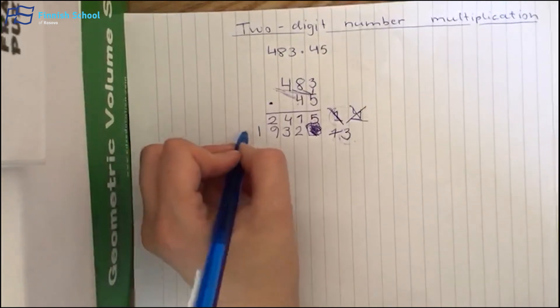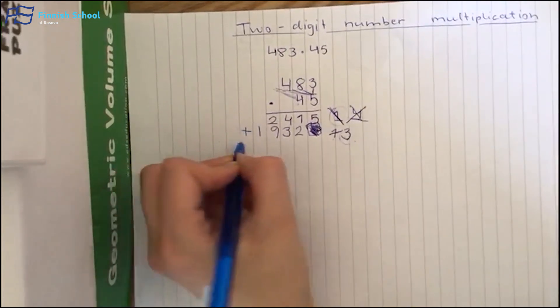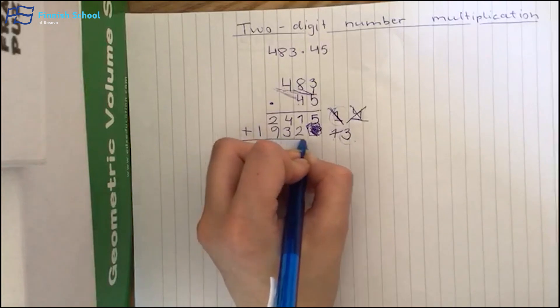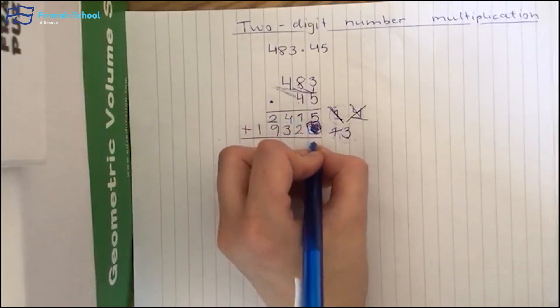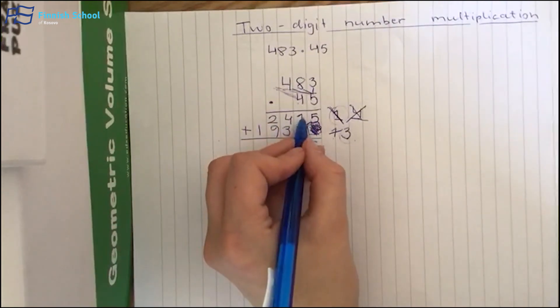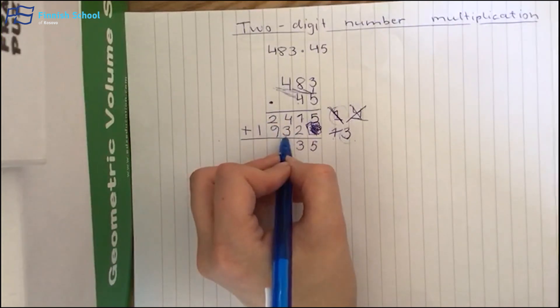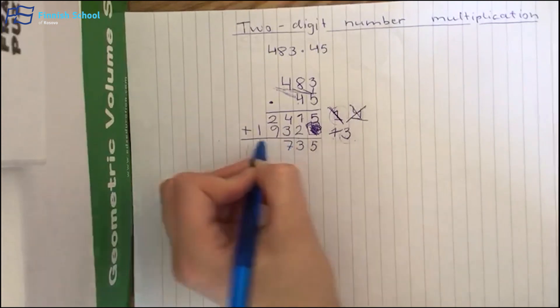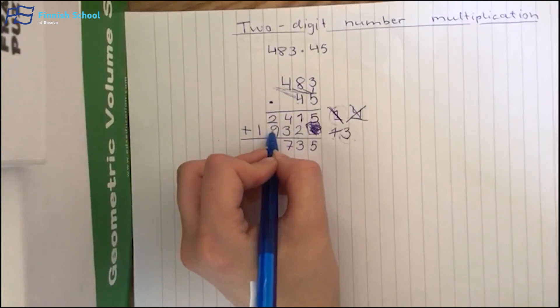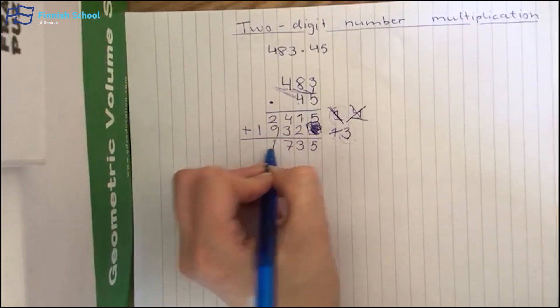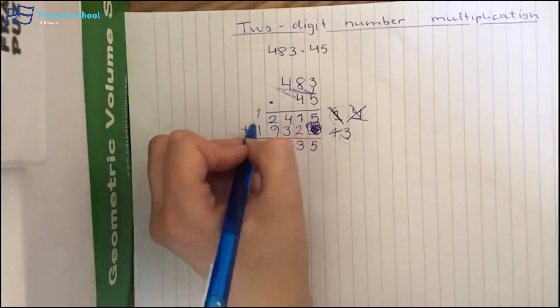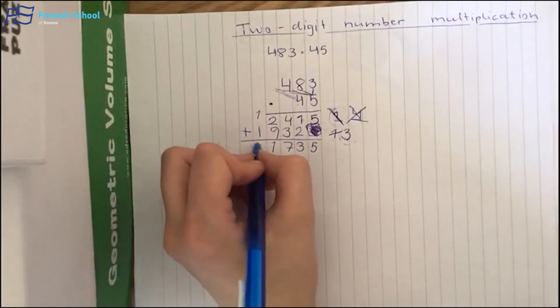And now we have to add these numbers. So 5 plus nothing, 5. 1 plus 2, 3. 4 plus 3, 7. 2 plus 9, 11. So number 1 here, and the other number 1 over here. 1 plus 1, 2.